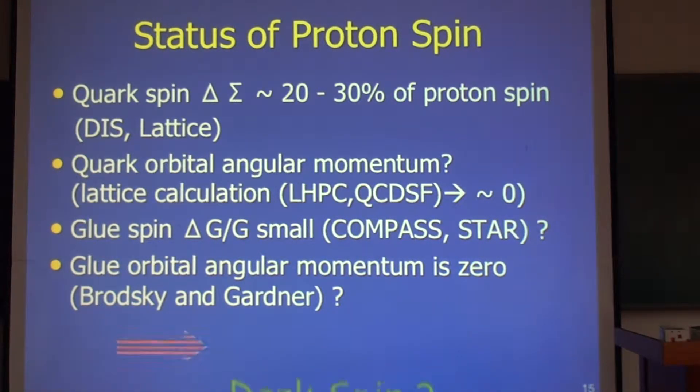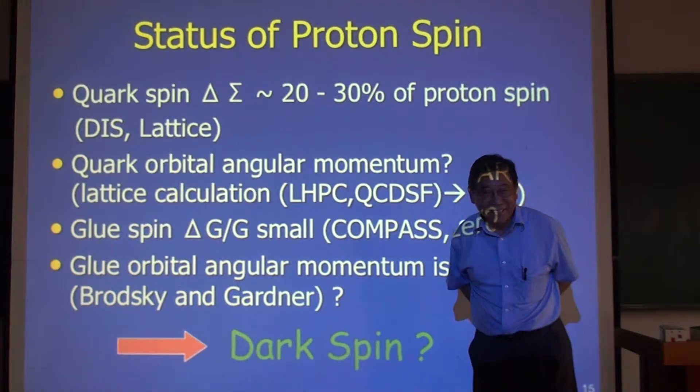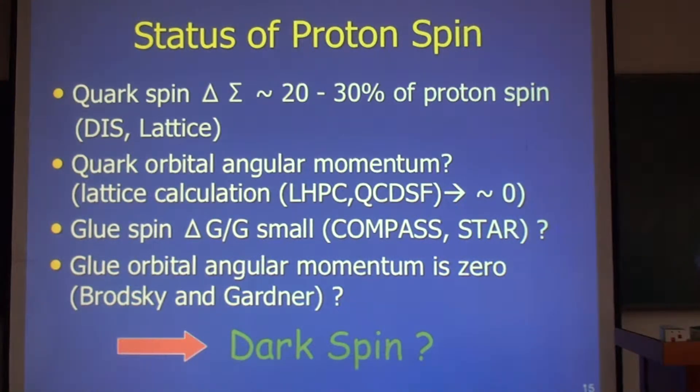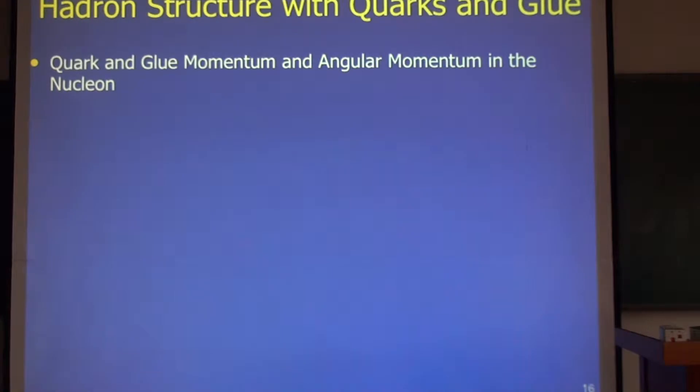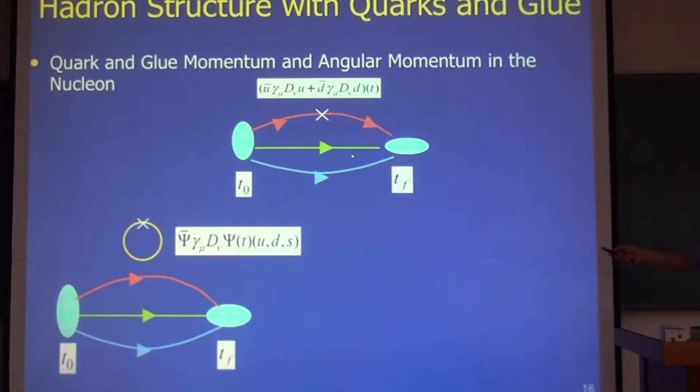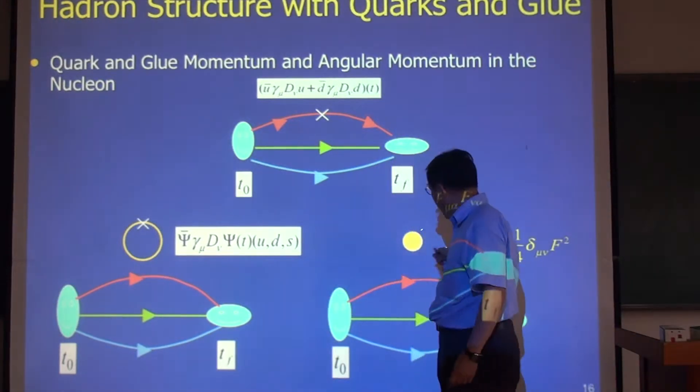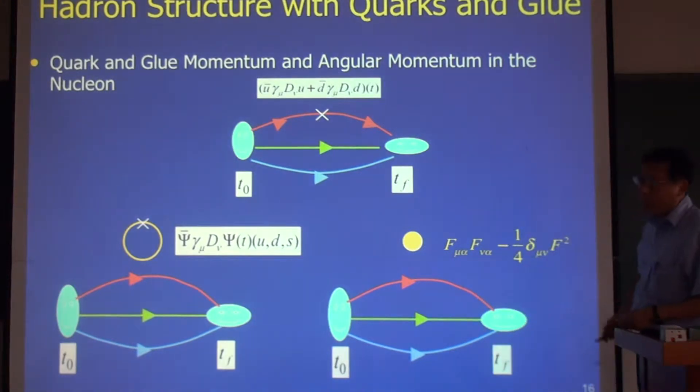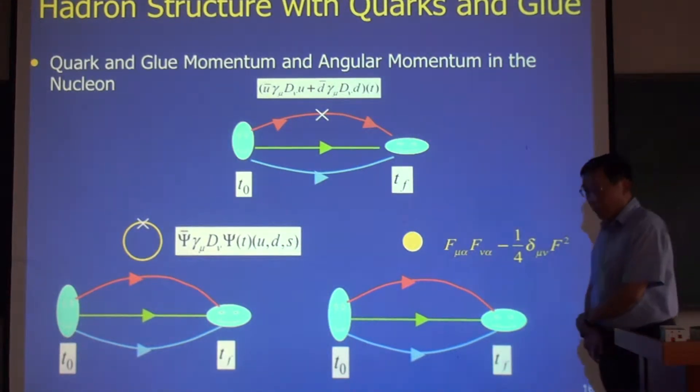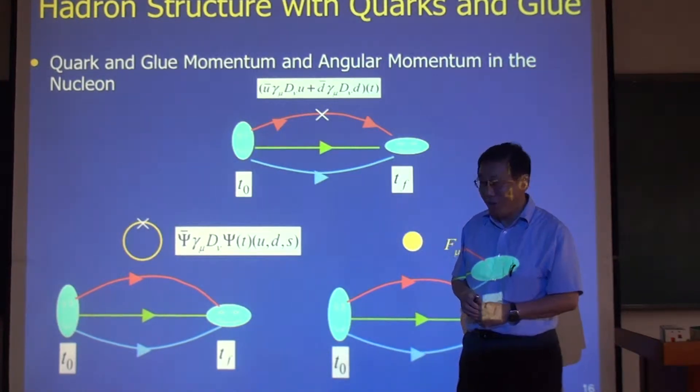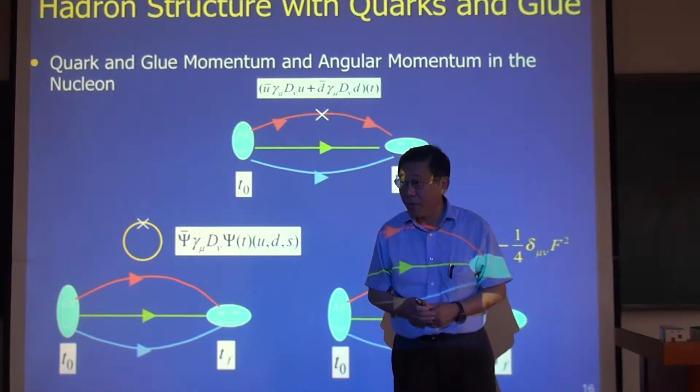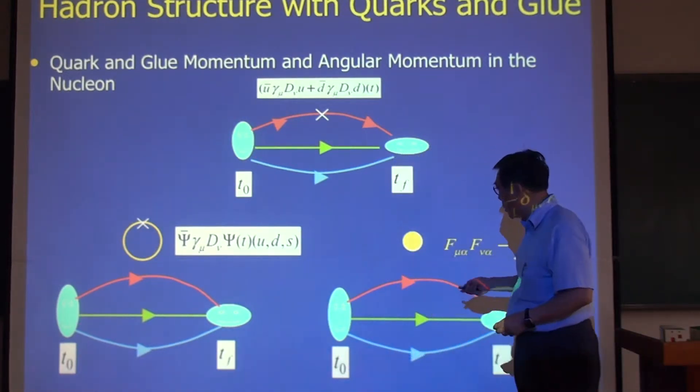So our job is to search for the dark spin. Where's the dark spin? Well, nobody knows. So I'll show you in the rest of the calculation where the dark spin is from. As I said before, if you calculate momentum, angular momentum, the nucleon structure, there are three-point functions. This is a connected insertion, this is a disconnected insertion. This is at least two orders of magnitude more expensive than this one. And there's the gluon operator inserted in the nucleon.